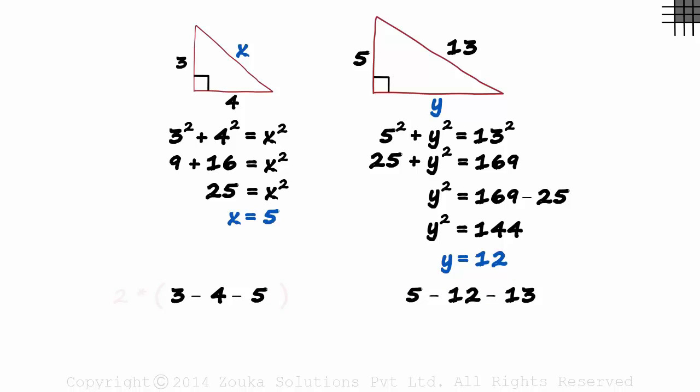If we multiply each of these numbers by two, we get six, eight and ten. And this too will be a Pythagorean triple. Even if we multiply each of these numbers by three, we get a Pythagorean triple. Nine, twelve and fifteen.